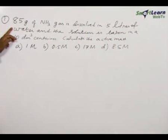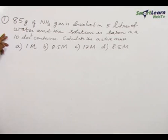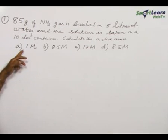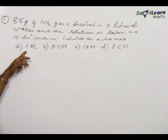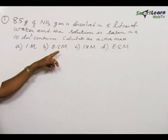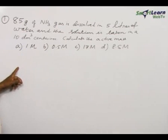Problem number one: 85 grams of ammonia gas is dissolved in 5 liters of water and the solution is taken in a 10 dm³ container. Calculate the active mass. The options are: A) 1 M, B) 0.5 M, C) 17 M, and D) 8.5 M.